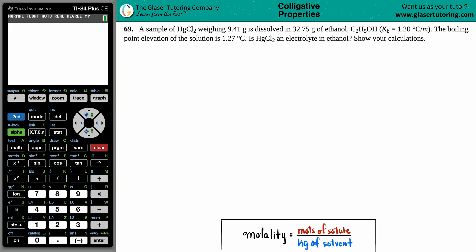Number 69. A sample of HgCl2 weighing 9.41 grams is dissolved in 32.75 grams of ethanol, which is C2H5OH, which has a Kb of 1.20 degrees Celsius per molality. The boiling point elevation of the solution is 1.27 degrees Celsius. Is HgCl2 an electrolyte in ethanol? Show your calculations.